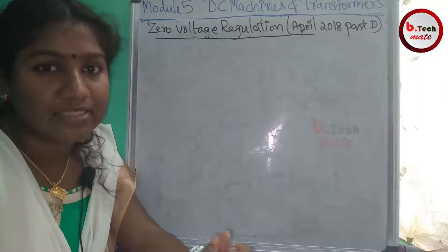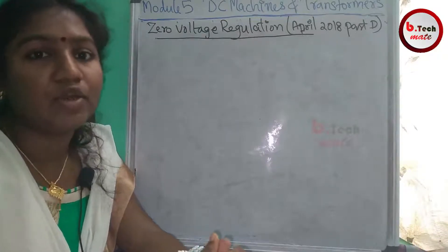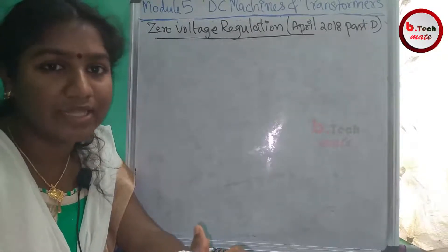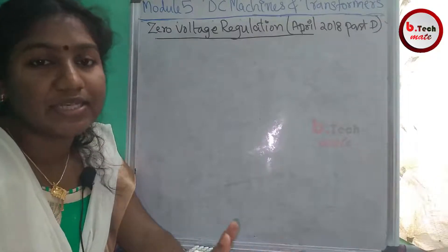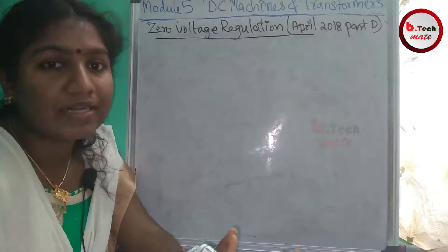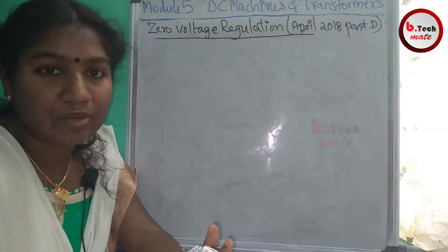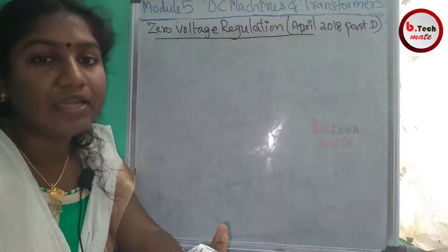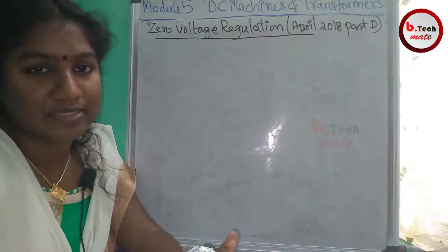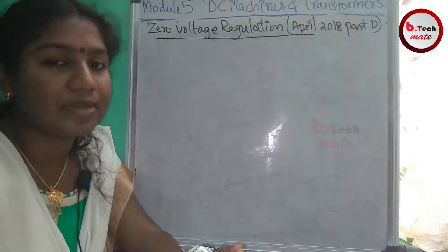The name is Zero Voltage Regulation. What is the meaning of Zero Voltage Regulation? It means the full load voltage does not change. The equation of Zero Voltage Regulation is zero. This is only theoretically possible for ideal transformers — it is not achievable in practical transformers.